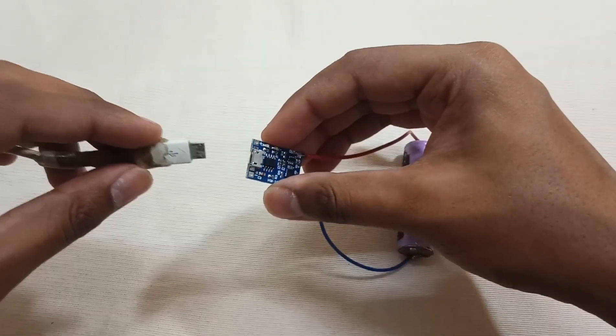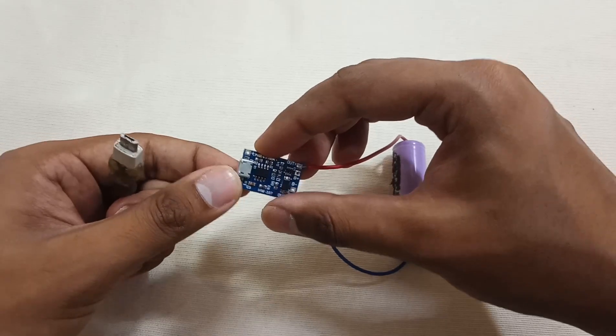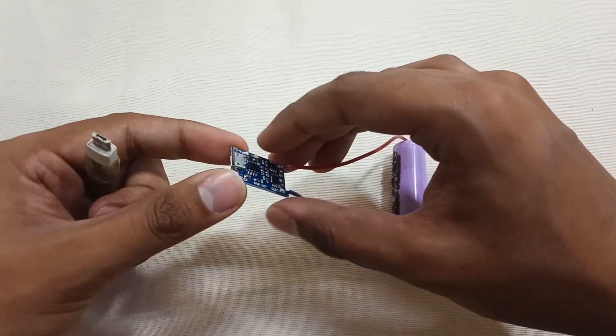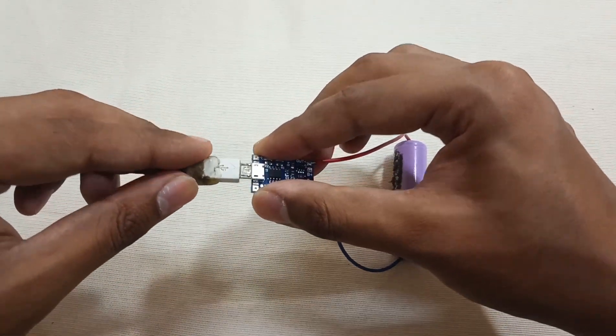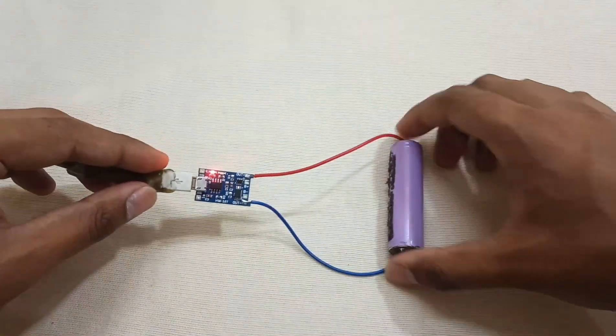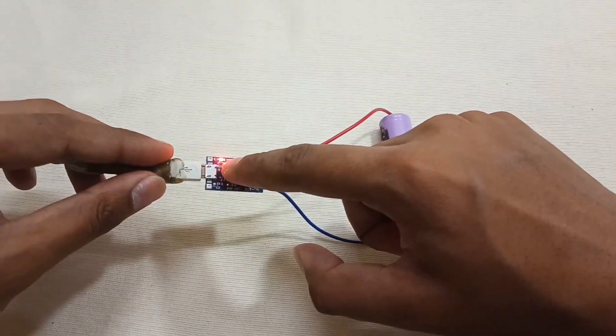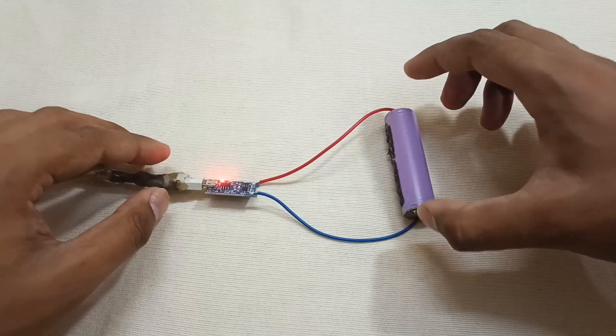Now here's the micro USB connector. It also comes with the USB-C port connector. This is the 5 volt input. As you can see, the red indicator light is turned on, which means that the battery is charging.